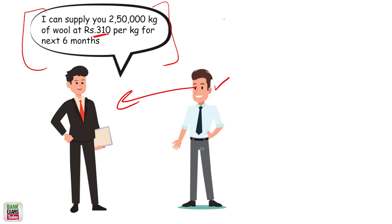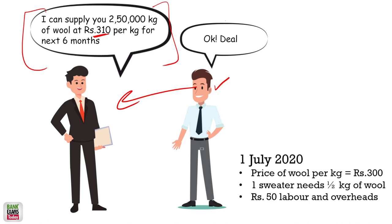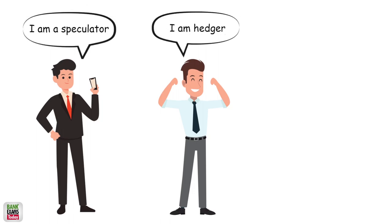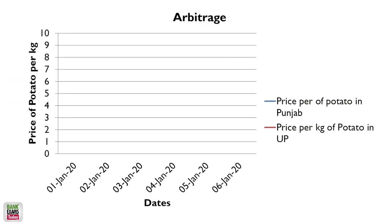Vardhman's main business is making sweaters — they are not interested in profiting from wool price fluctuations. Their whole business cannot be dependent on the price of wool. The person taking on that risk is the speculator, and the person avoiding the risk is the hedger. In this case, the owner of Vardhman Textiles is the hedger.